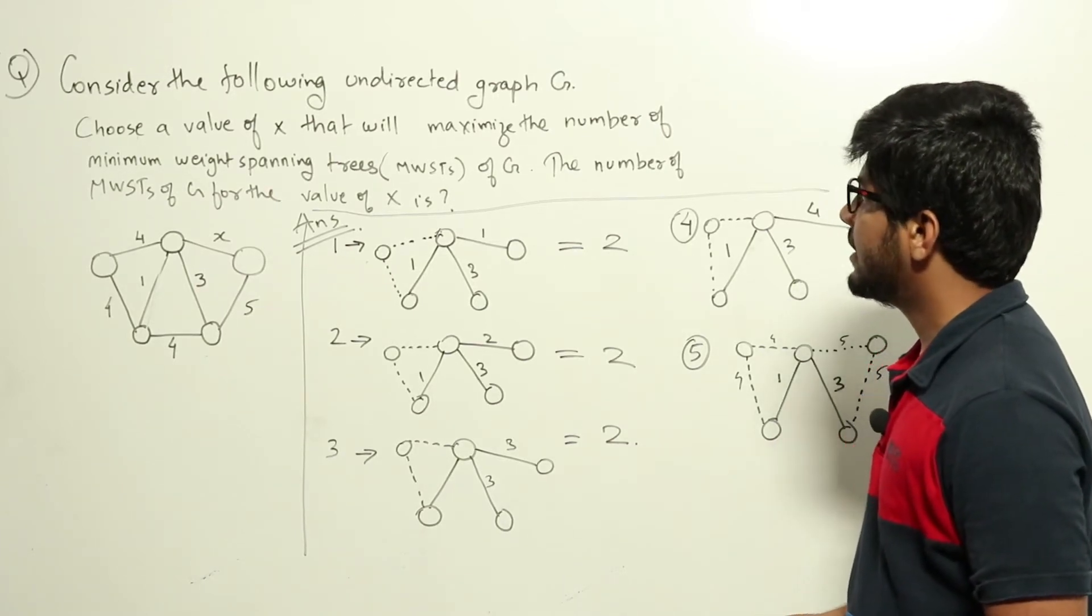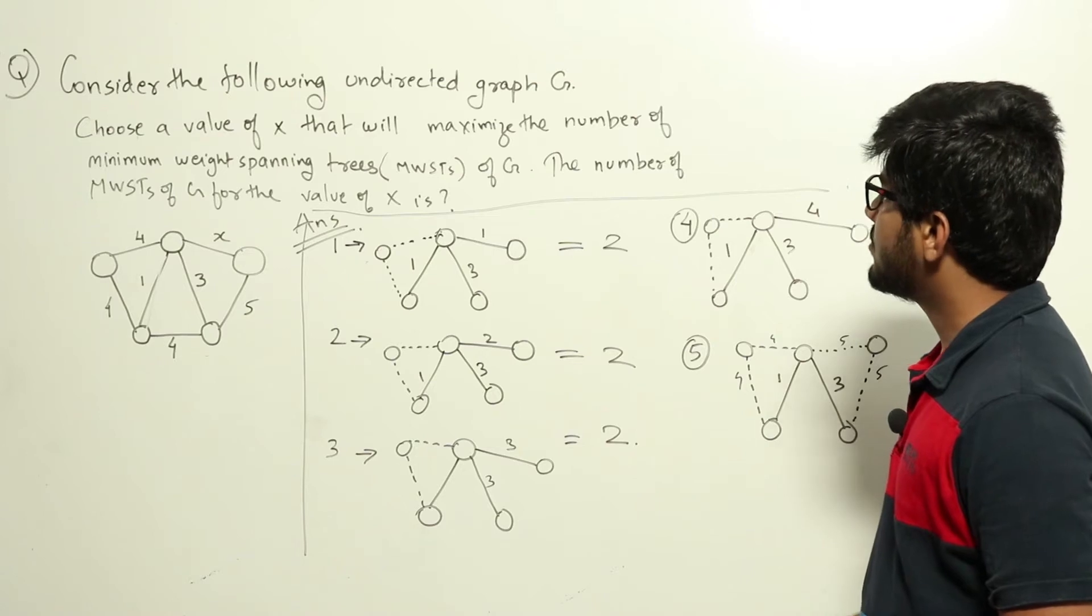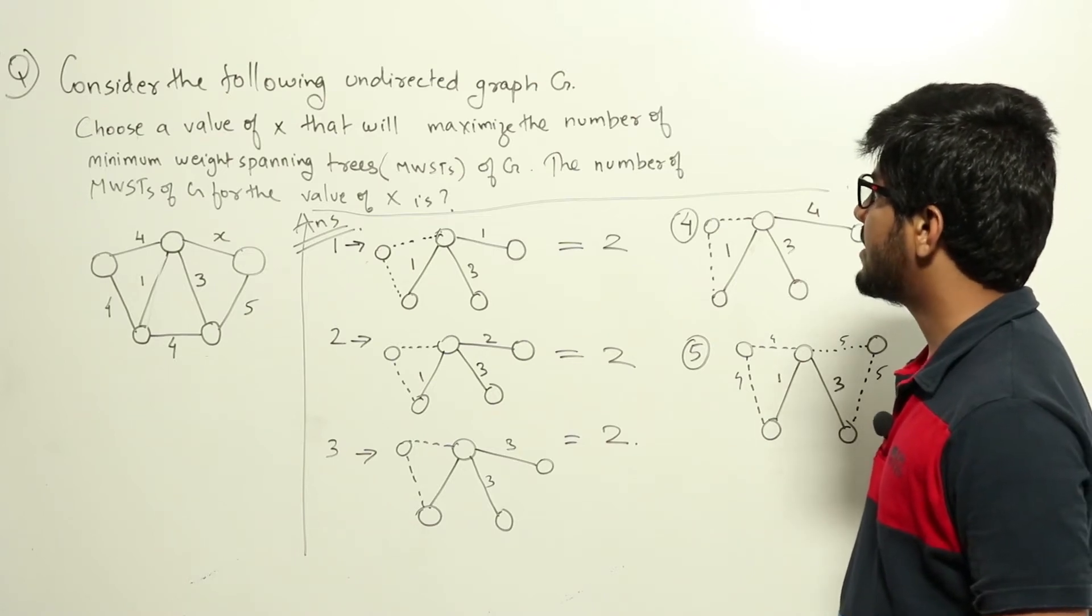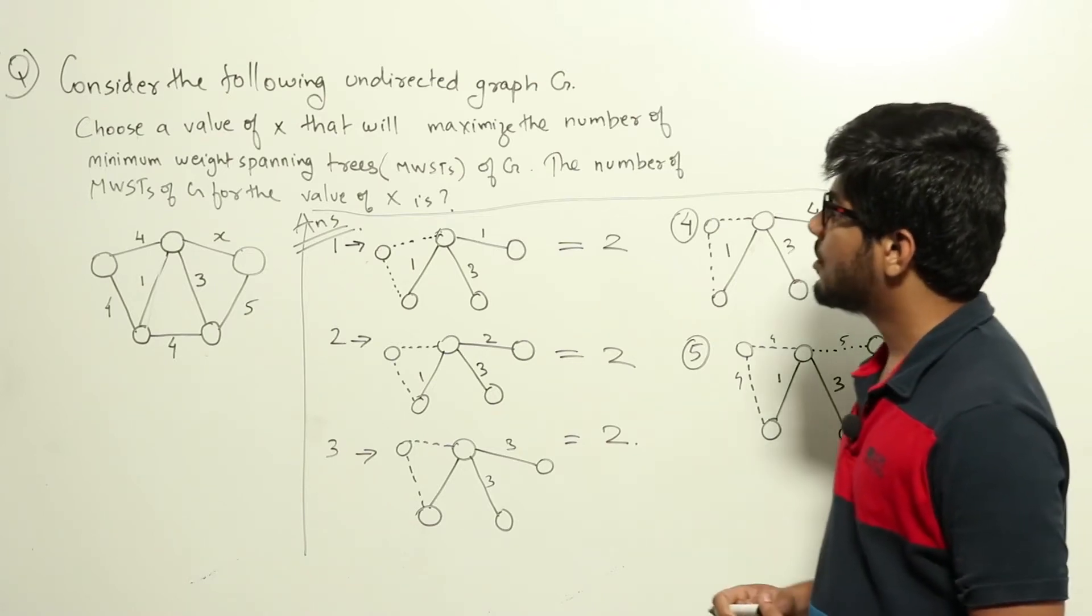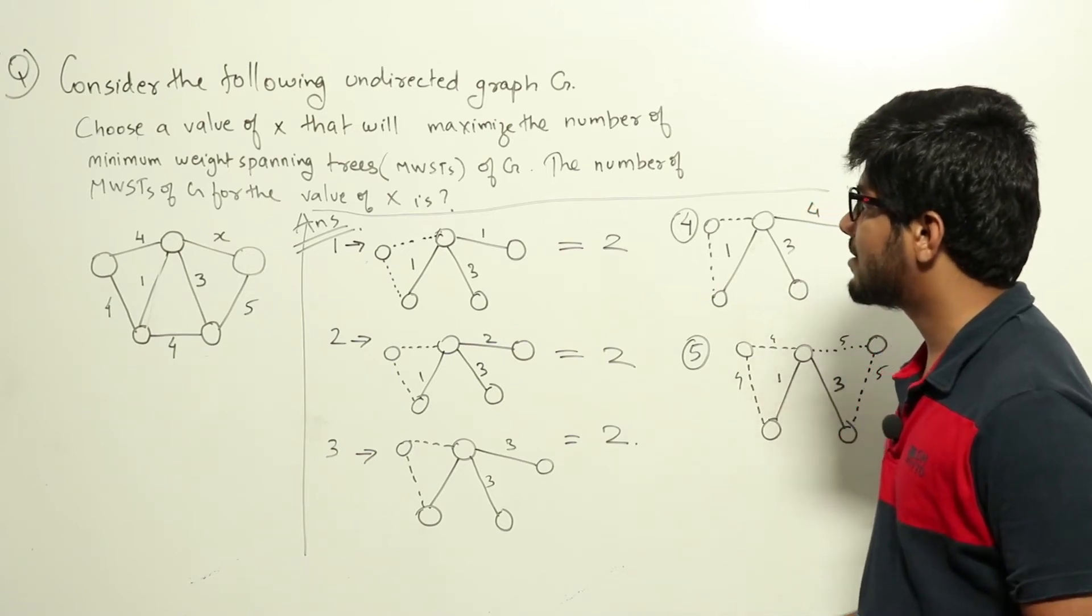Consider the following undirected graph G. Choose a value of X that will maximize the number of minimum weight spanning trees of G. The number of minimum weight spanning trees of G for the value of X is.